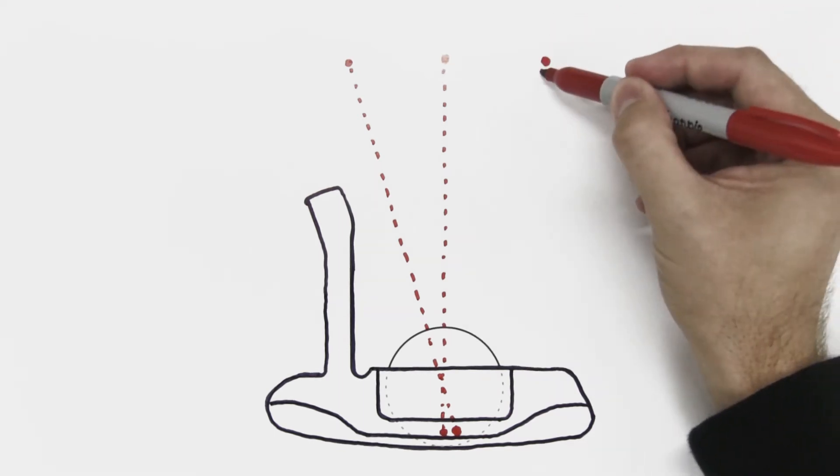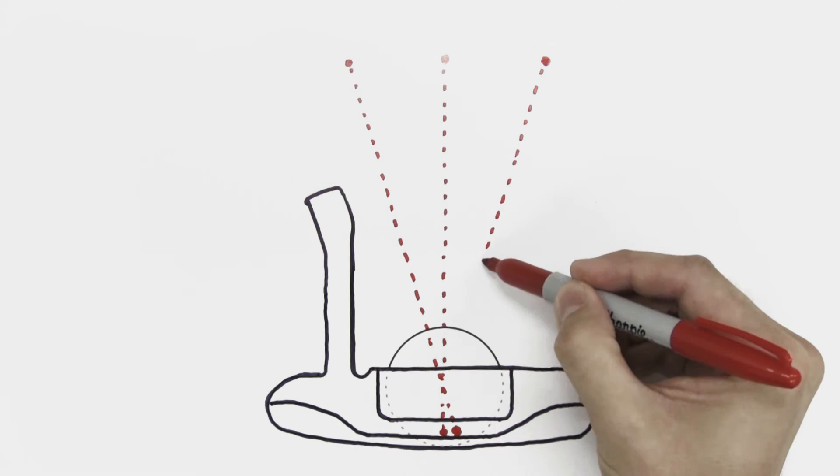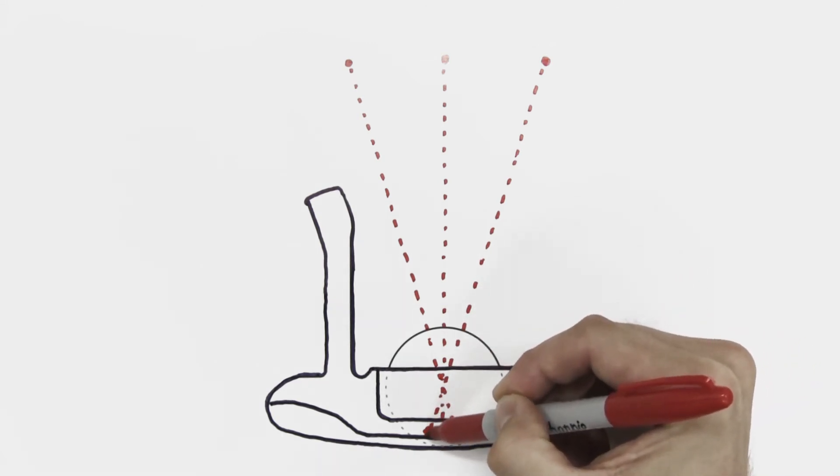Many golfers also have their eyes outside the golf ball. For these golfers, an alignment line right here would be most accurate.